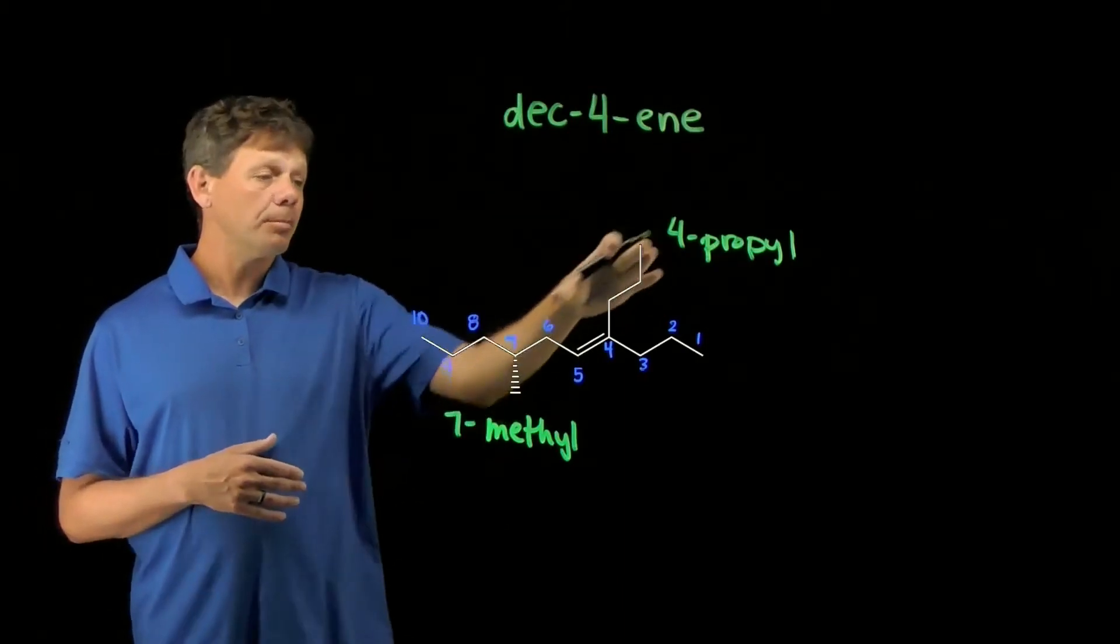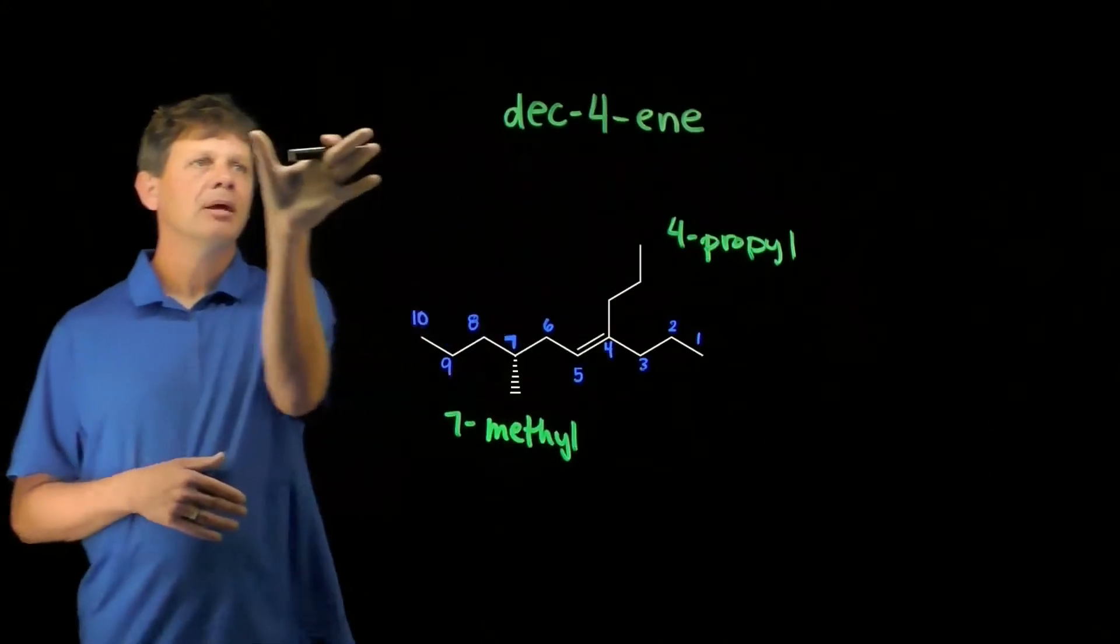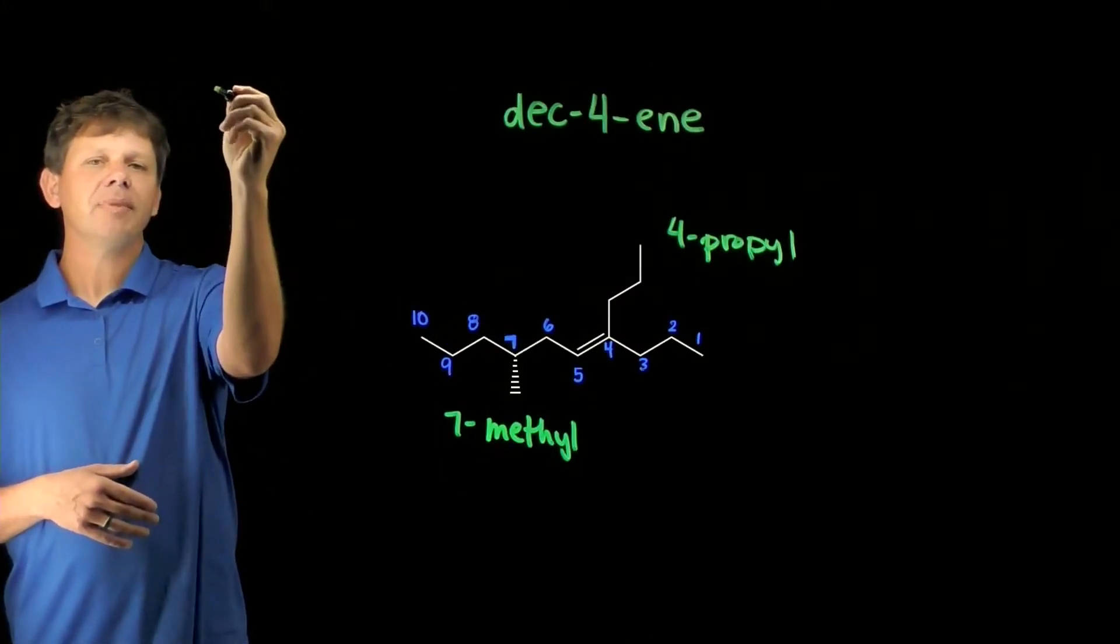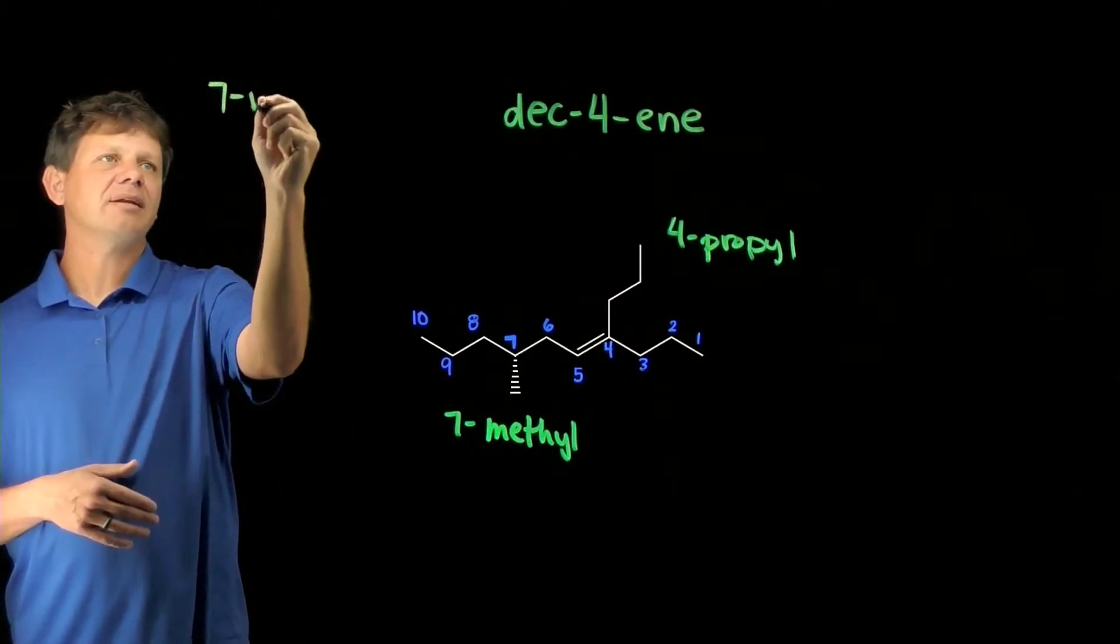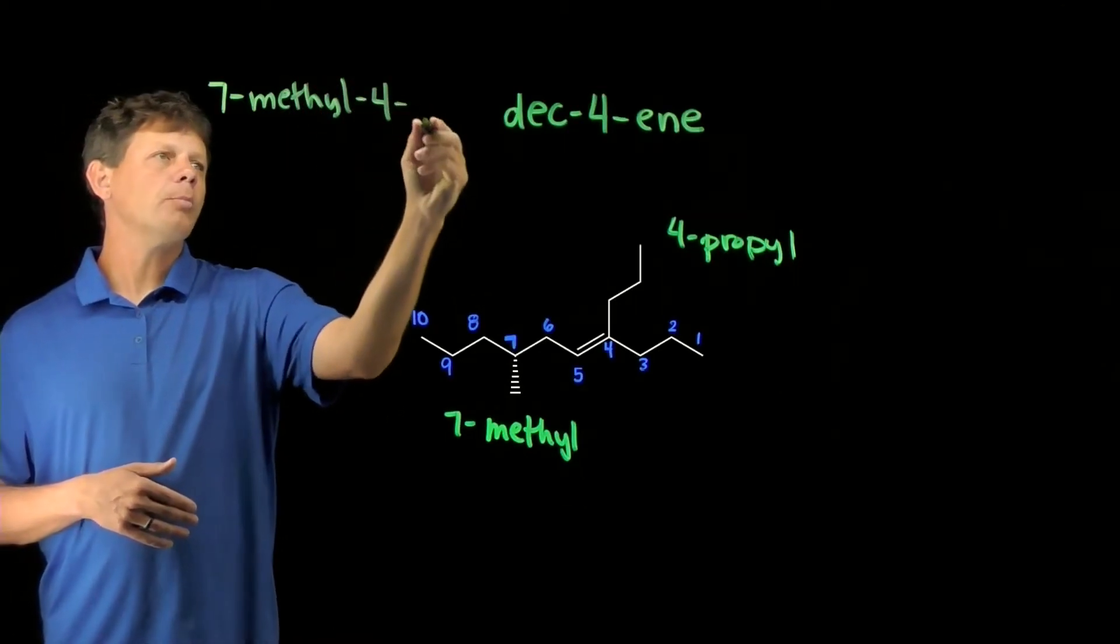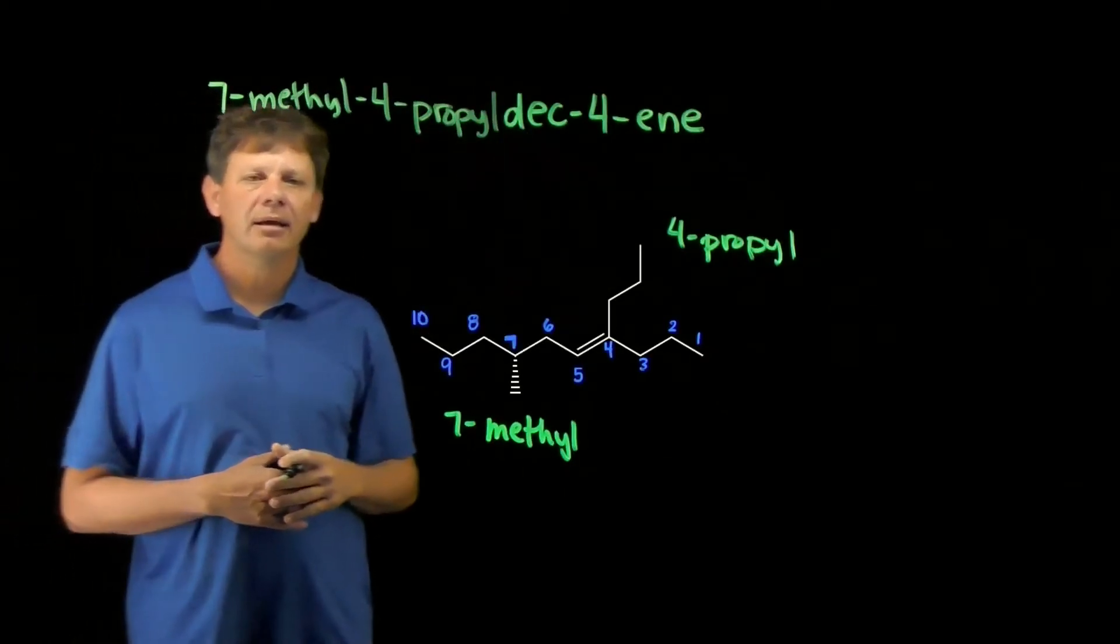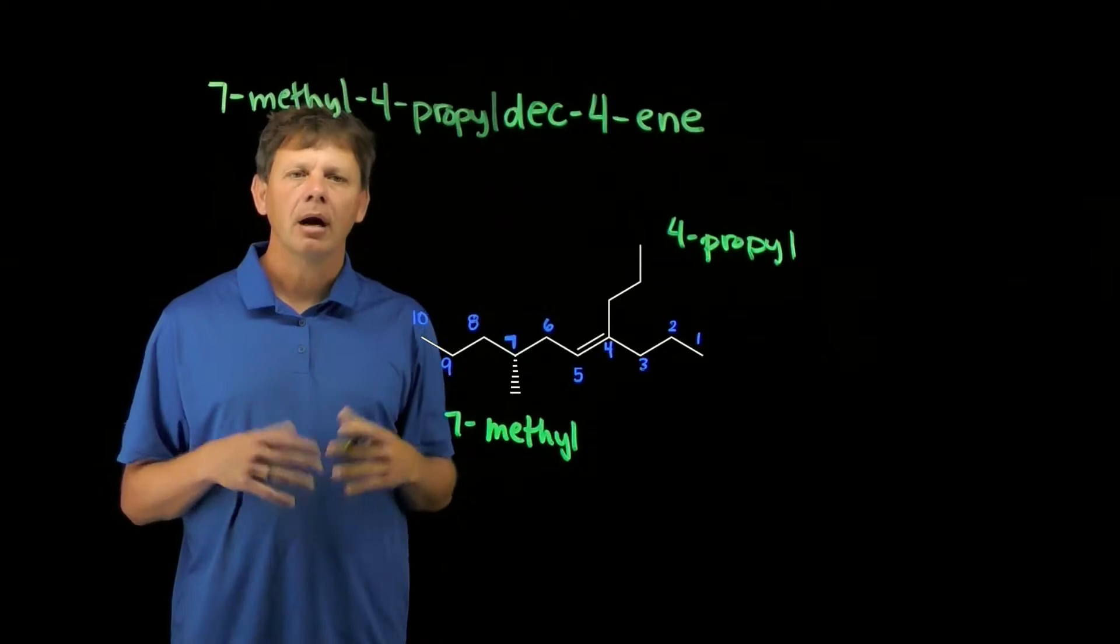All that remains then is to put these in alphabetical order. M comes before P, so hopefully we can get this spacing right. We're going to call this 7-methyl, 4-propyl, all one word, dek-4-ene. Are we done?